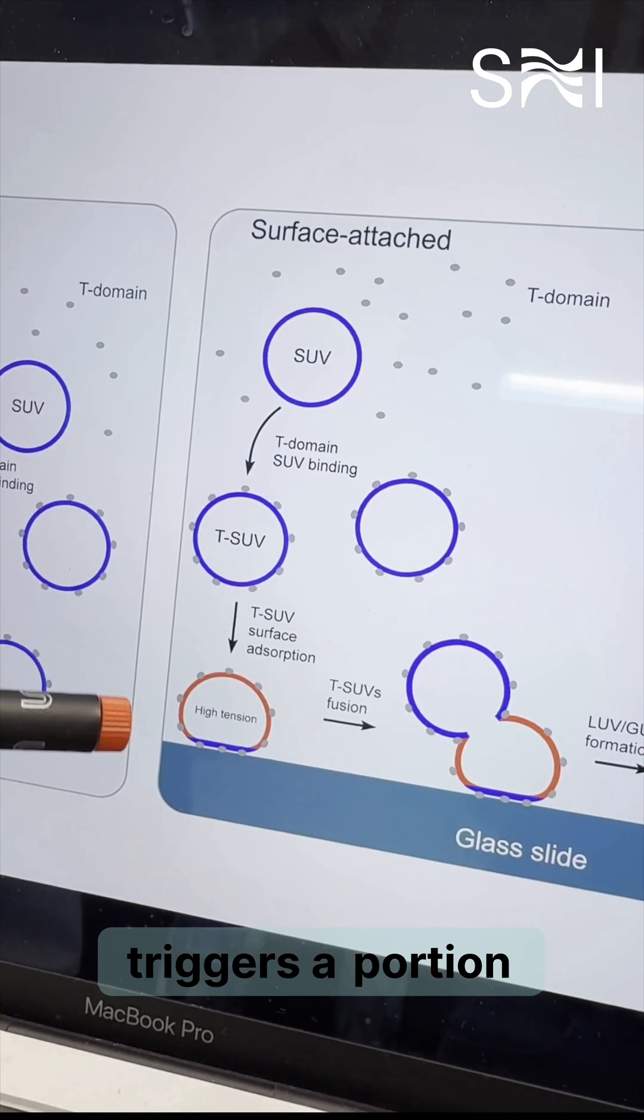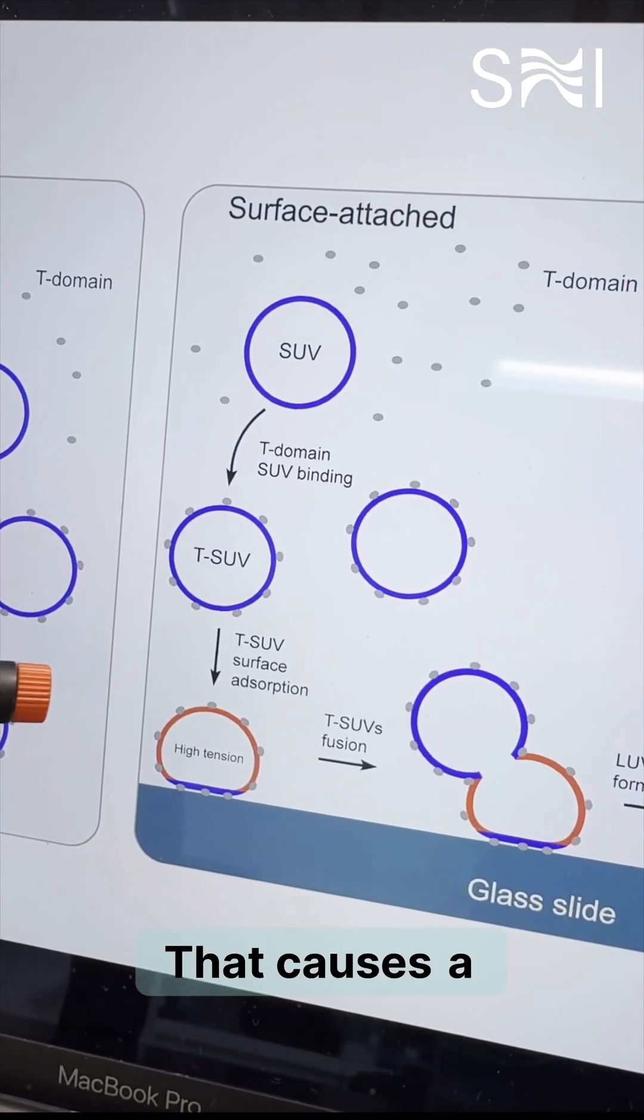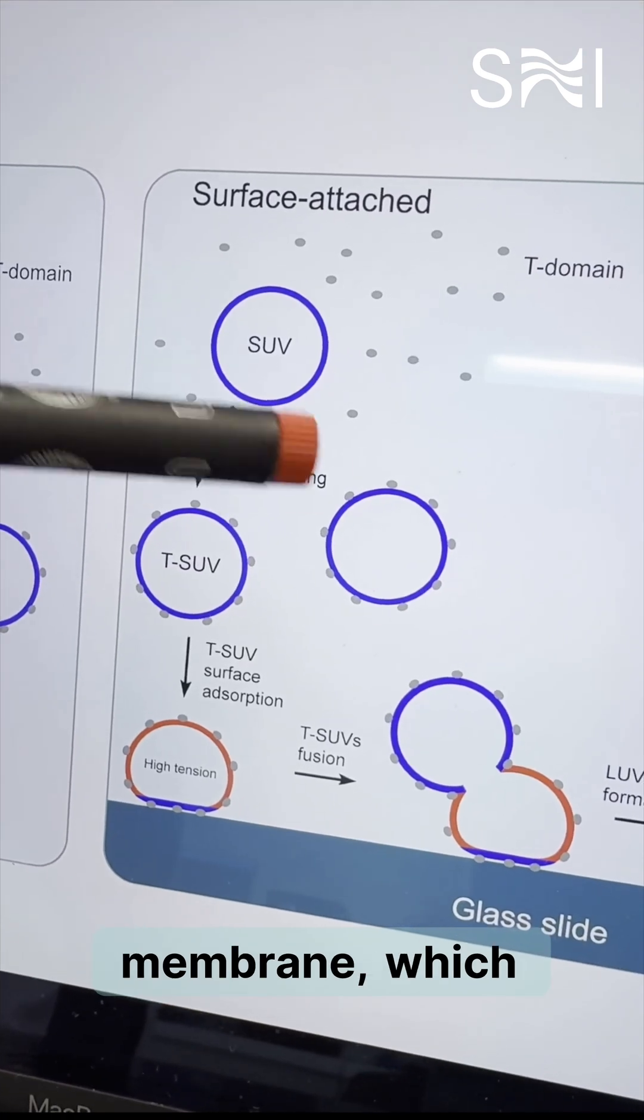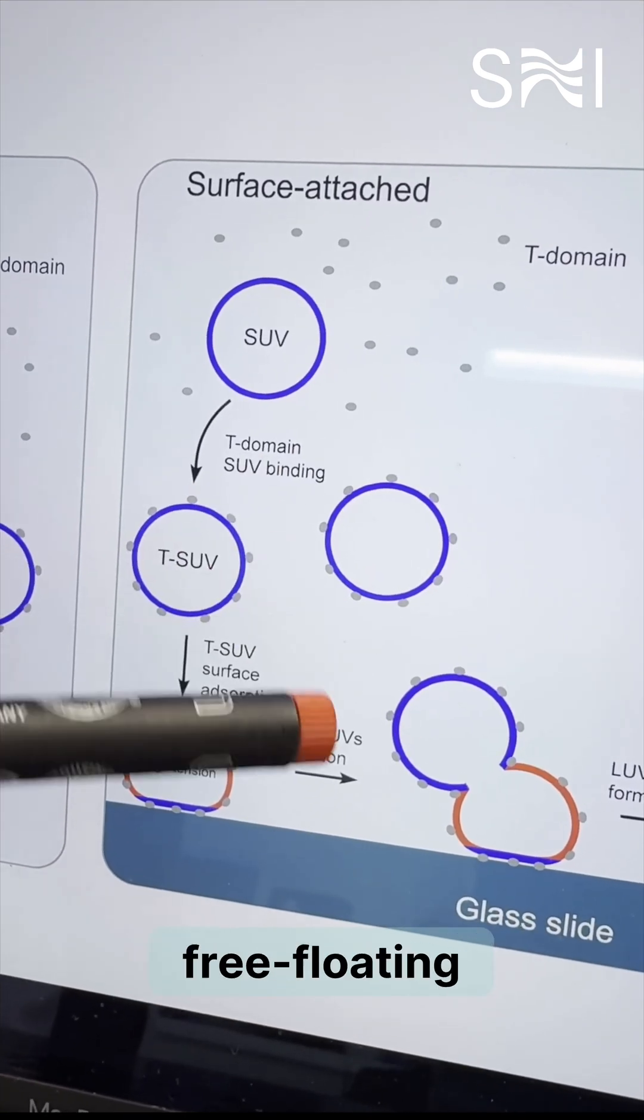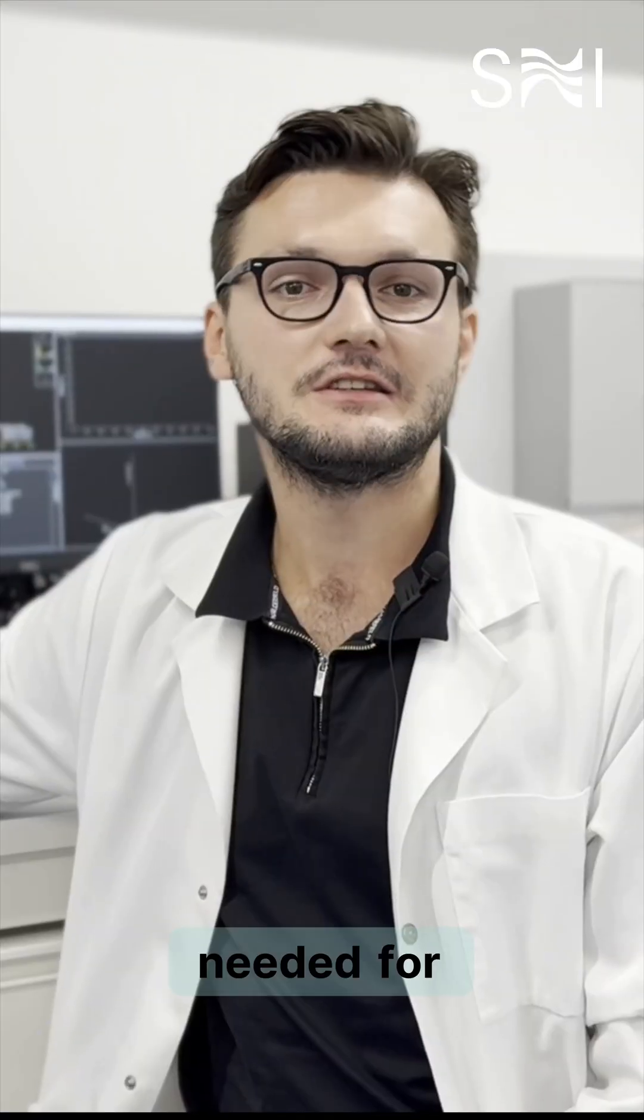The binding triggers a portion of vesicles to stick to a glass surface that causes tension on the membrane, which leads to fusion with the free-floating vesicles. The T domain stabilizes the curved membrane regions needed for fusion.